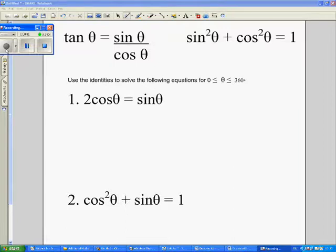There are two identities that you need to know. The first one is that tan θ equals sin θ divided by cos θ, and that sin² θ plus cos² θ equals 1. We're going to use these identities to solve the following equations.